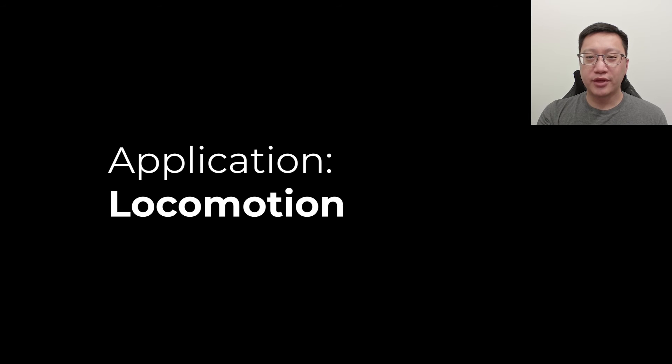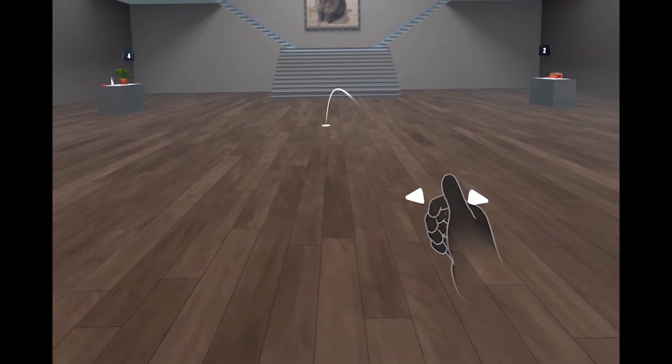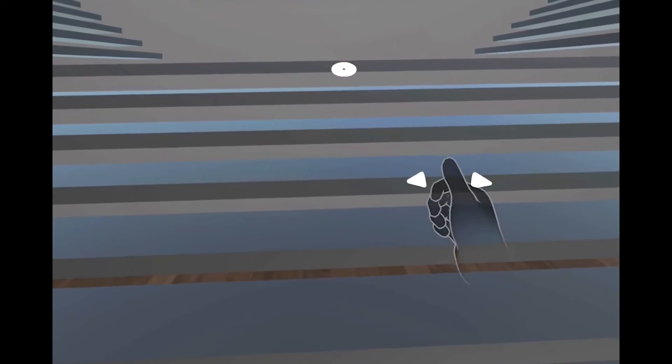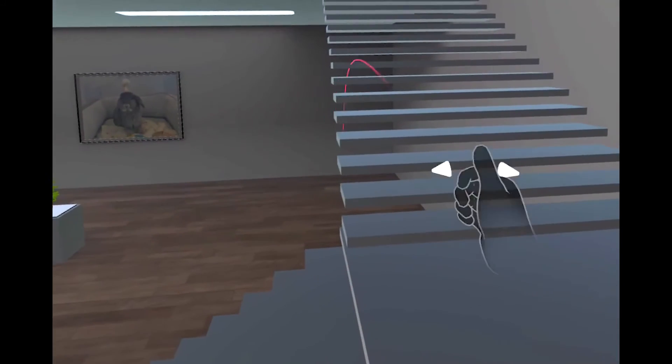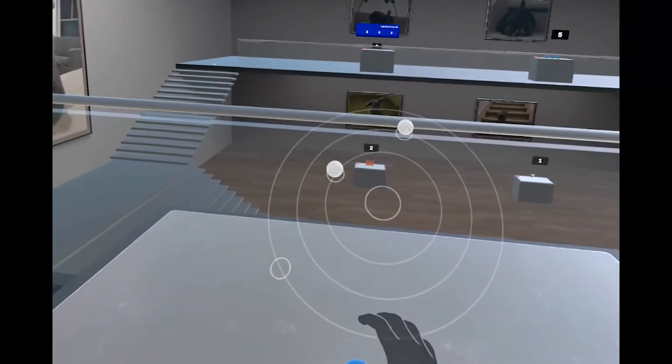We were able to run the STMG model on Meta Quest headsets, which enabled us to explore use cases in real time. We mapped tap to teleport, left swipe to turn left and right swipe to turn right. To reduce instances of inadvertent gestures, we also required the users to be in a handshake orientation when performing locomotion operations.